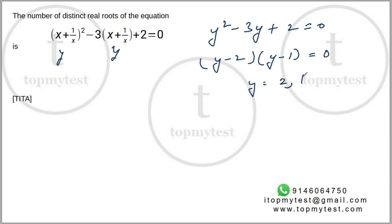But that's not the final answer. The question asks how many roots are possible for x. We've found the values of y. Now let's see whether we can get real values for x satisfying these. One scenario is x + 1/x = 2. The other scenario is x + 1/x = 1.